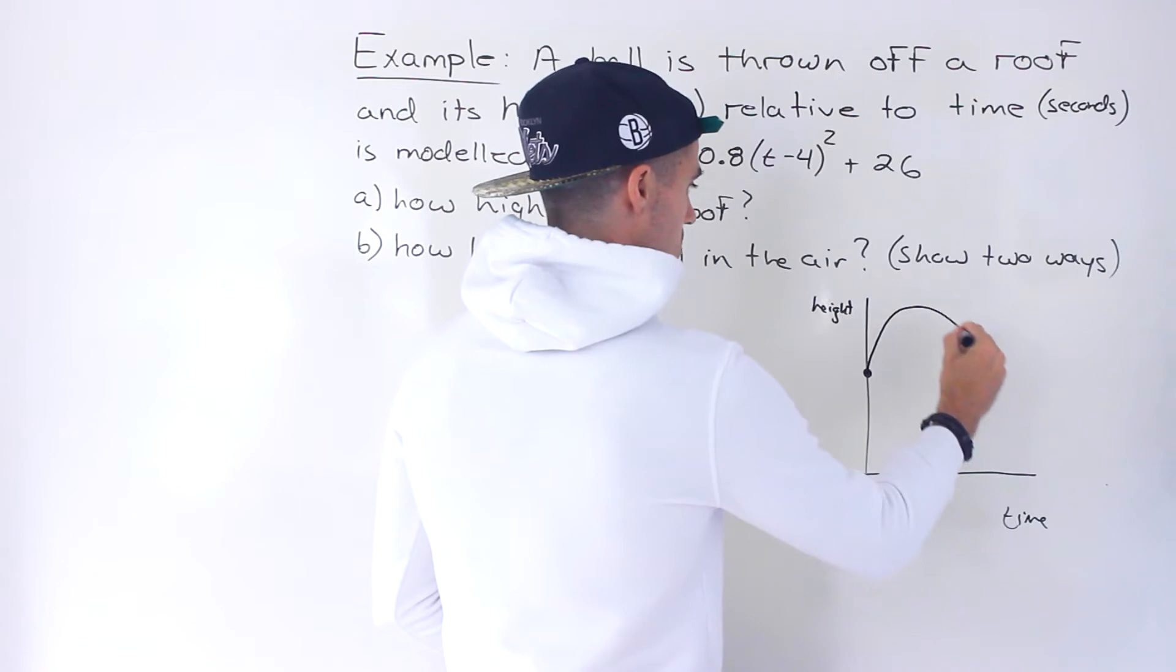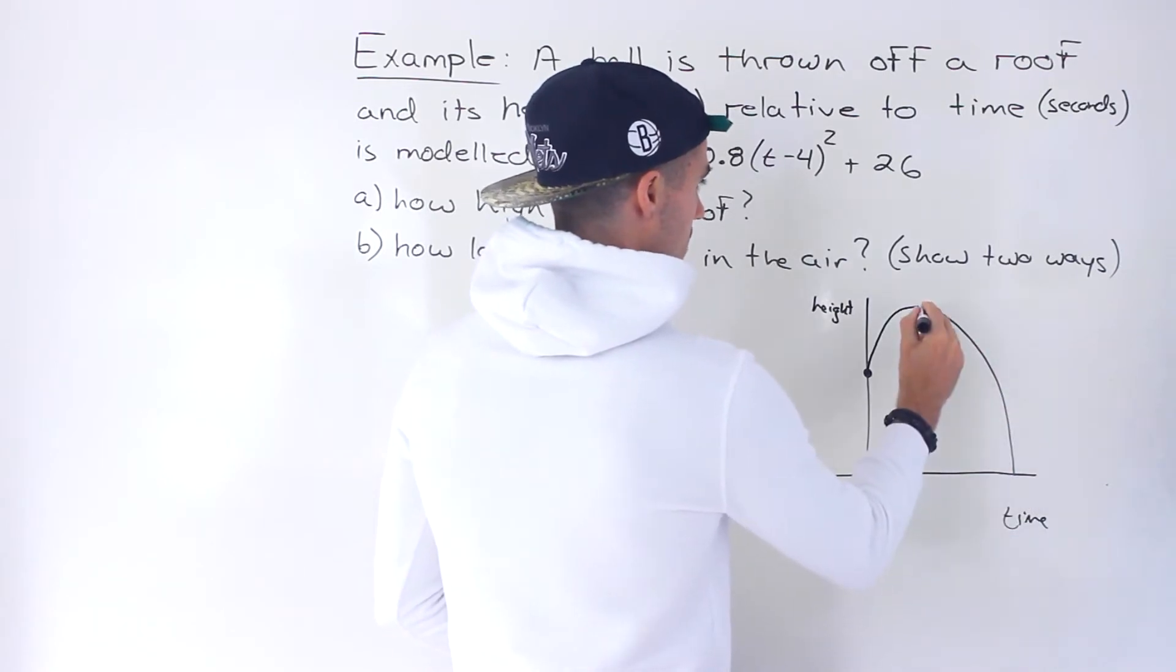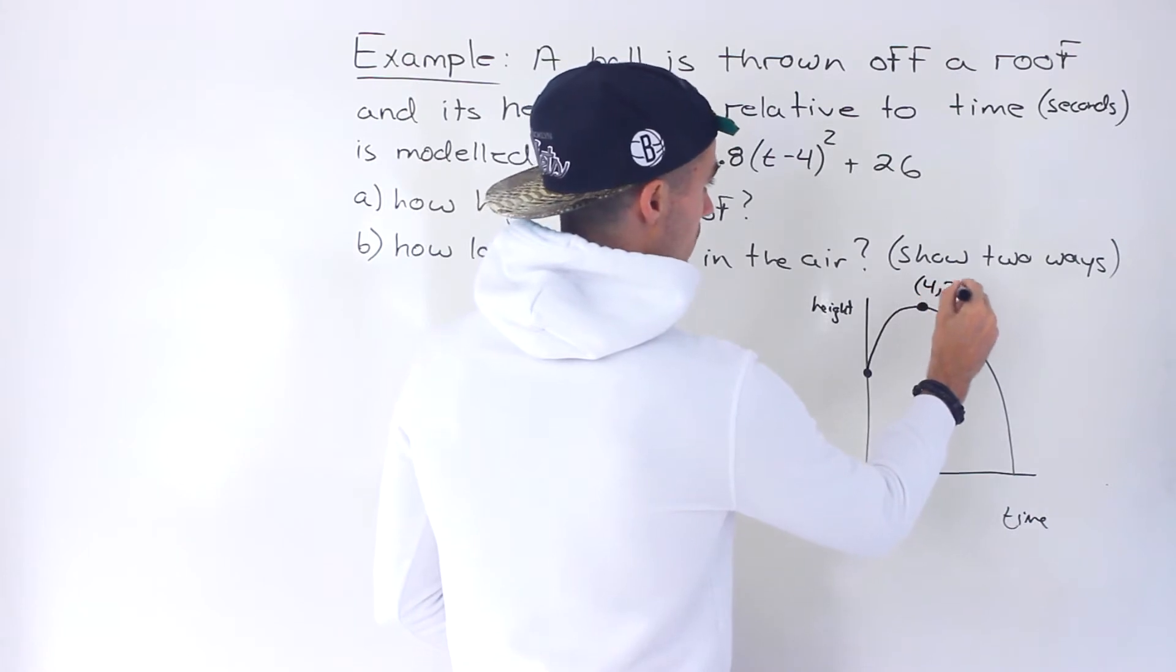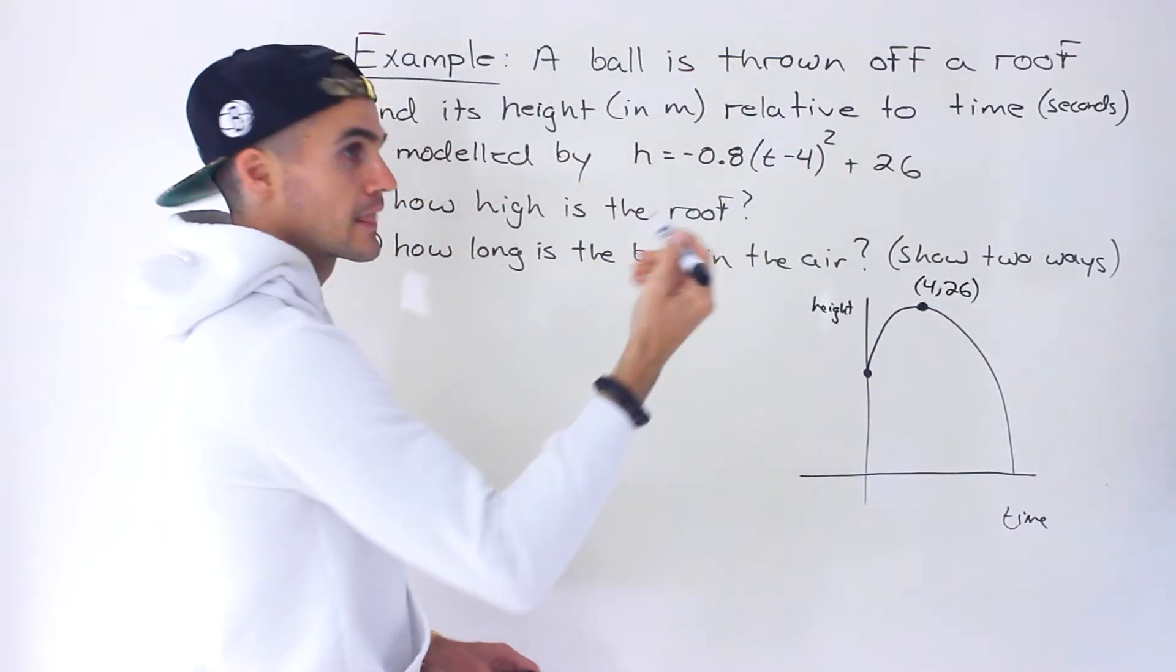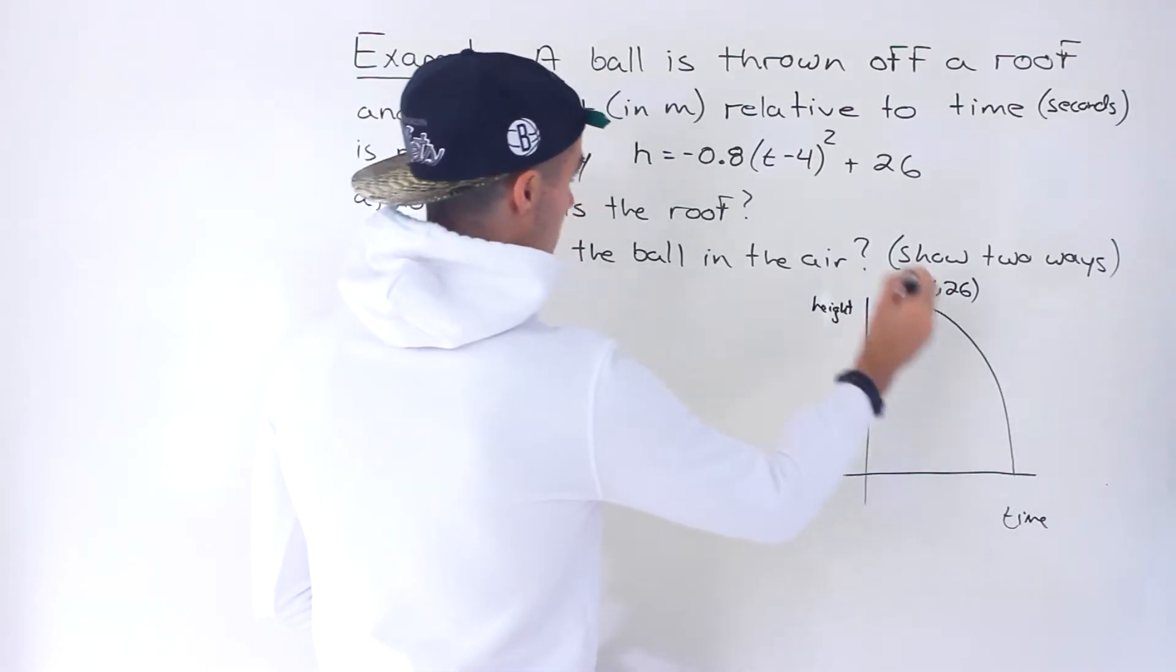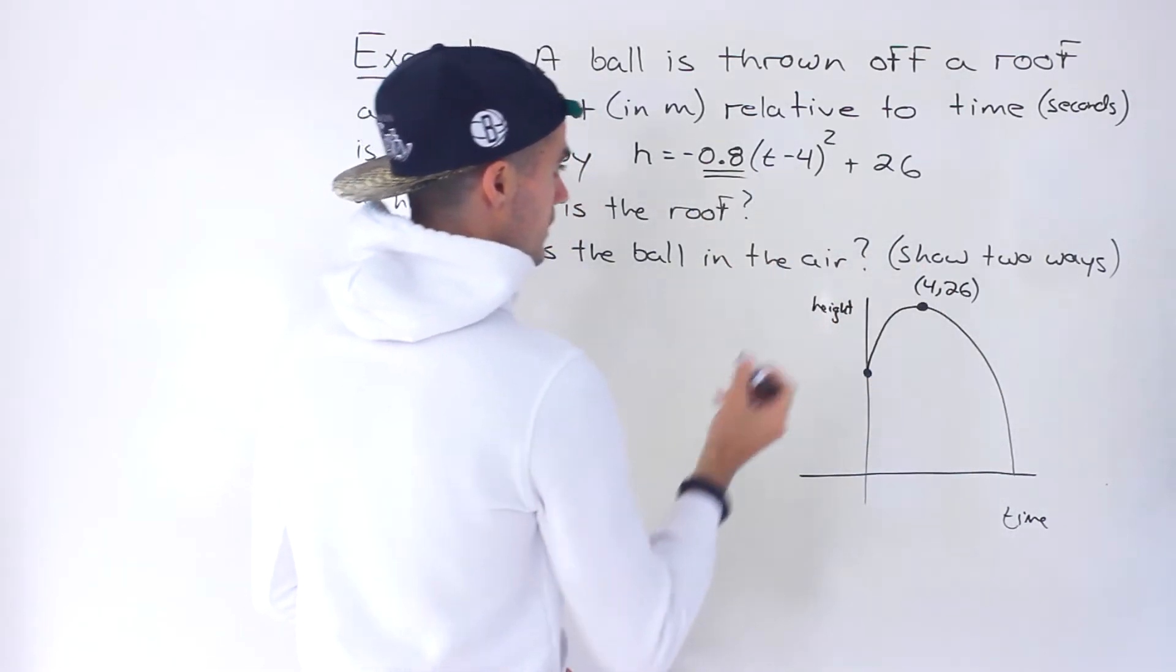If we draw this, it's going to be a quadratic that looks like this. Now this vertex we're given is 4 and 26 because the quadratic is in vertex form, and it's a quadratic that opens down because the a value here is negative.